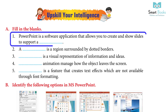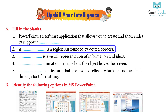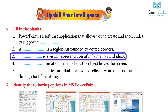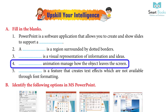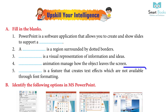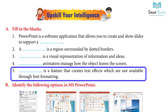Fill in the blanks: 1. PowerPoint allows you to create and show slides to support a — Answer: Presentation. 2. A — is a region surrounded by dotted borders. Answer: Placeholder. 3. — is a visual representation of information and ideas. Answer: Smart art graphic or infographic. 4. — animation manages how objects leave the screen. Answer: Exit animation. 5. — is a feature that creates text effects not available through font formatting. Answer: Word Art.